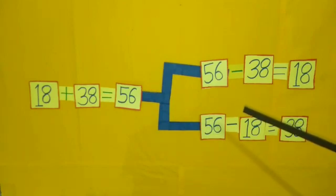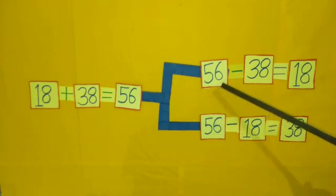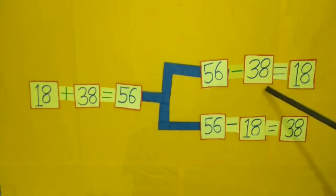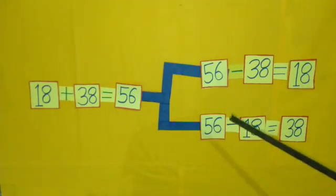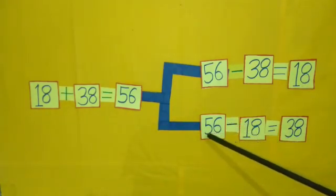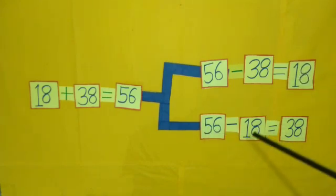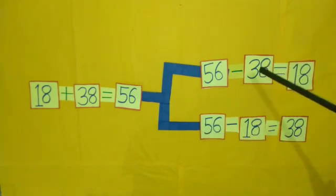When we subtract 38 from 56, it becomes 18. Similarly, when we subtract 18 from 56, it becomes 38. This is also known as relation in addition and subtraction.